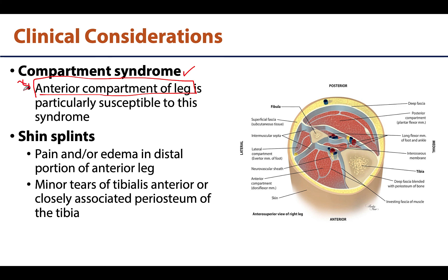This compartment is also commonly associated with shin splints, sometimes called tibialis anterior strain. Shin splints typically present as pain and/or edema in the area of the distal two-thirds of the anterior leg, often caused by repetitive microtrauma — little micro tears in the tibialis anterior or even minor tears of the periosteum surrounding the neighboring tibia. When you think shin splints, think anterior compartment of the leg.